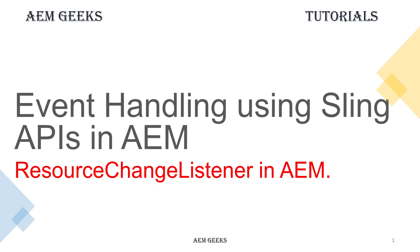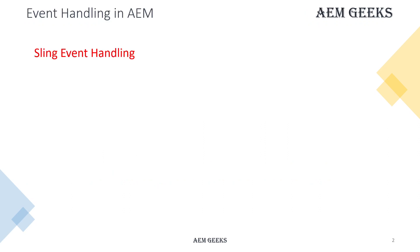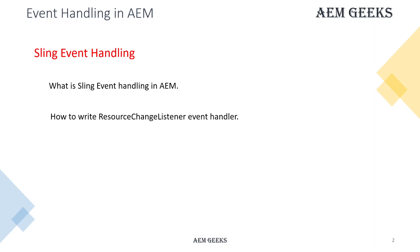In this tutorial I'll talk about event handling using Sling APIs. There is an interface called ResourceChangeListener available to write an event handler using Sling APIs. I'll cover how you can write an event handler using ResourceChangeListener and then we'll have a demo.